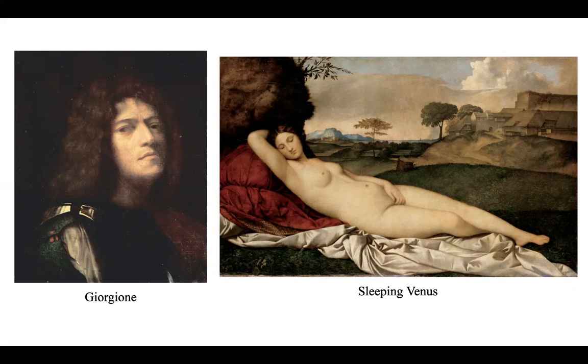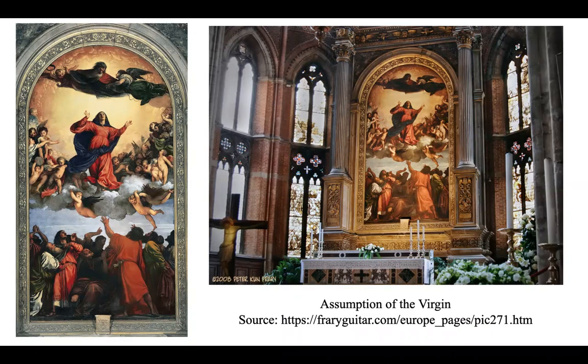They once collaborated on the frescoes of the Fondaco de Tedeschi, for which the attributions of several works are still controversial today as it was so difficult to distinguish between the two. In fact, after Giorgione's death in 1510, Titian assumed the task of adding the landscape background to Giorgione's unfinished work, Sleeping Venus. As Titian built his reputation, he was commissioned to paint some of the most prestigious public religious paintings. He further established his reputation and status with the 97-meter-high altarpiece, Assumption of the Virgin, for the high altar of the Franciscan Church of Santa Maria Gloriosa dei Frari in Venice.